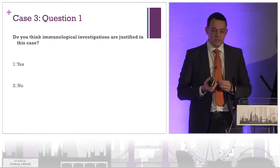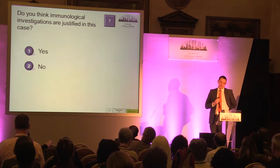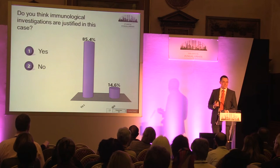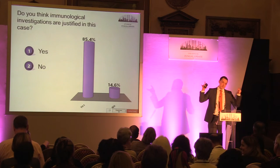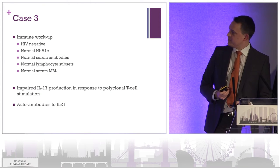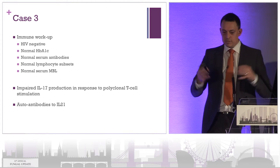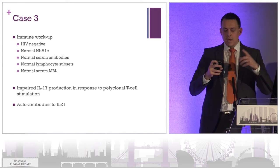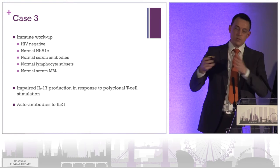Do you think immunological investigations are justified in this case? Yes or no? 85% said yes — for those who didn't think it was warranted, come and see me afterwards. His immune workup: HIV negative, not diabetic, normal antibodies, normal lymphocyte subsets. Interestingly, he has impaired IL-17 production in response to polyclonal T-cell stimulation, and he also has high-level autoantibodies to IL-21. IL-21 is important in immune signalling going down the T helper cell 17 pathway, which helps mucosal immune responses to candida and to staphylococci.